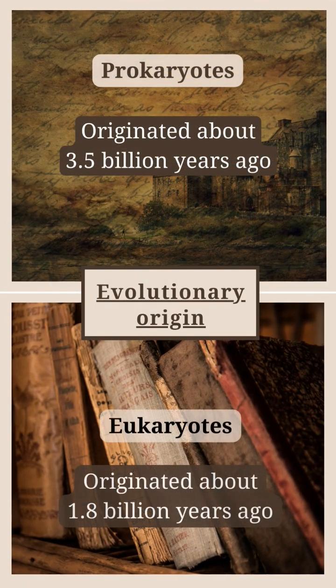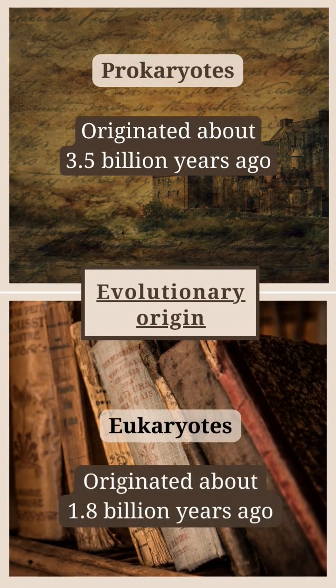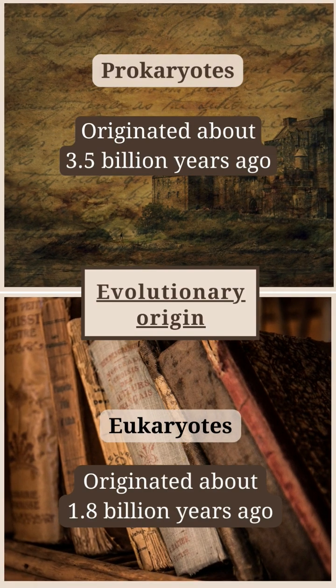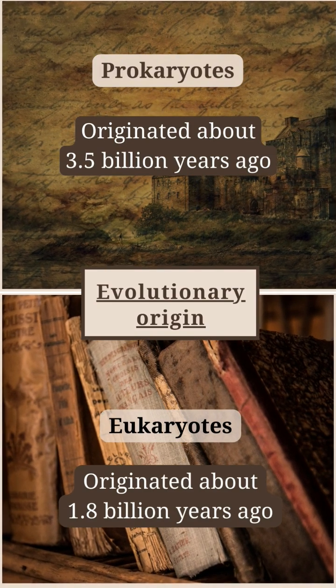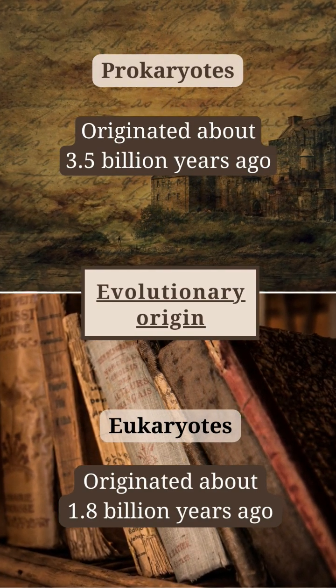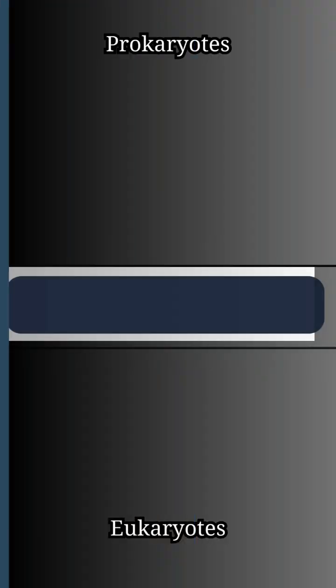Prokaryotic cells originated about 3.5 billion years ago, while eukaryotic cells originated about 1.8 billion years ago.